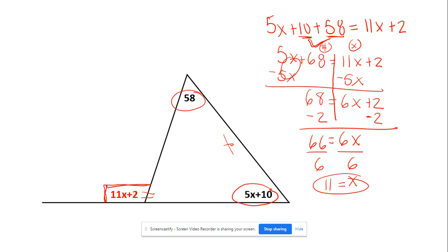Now we aren't done because we need to plug it back in to find that missing angle. In your homework, you're going to have it where it's red. And if it's red, that's the angle you need to find. So we're going to plug that back in. So instead of writing X, we're going to write 11 times 11 plus 2. So 11 times 11 is 121 plus 2. So our answer is going to be 123 degrees.